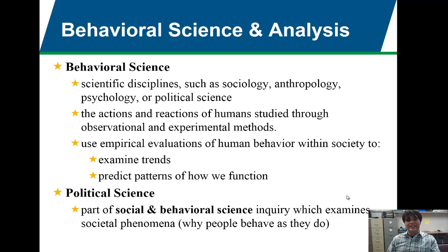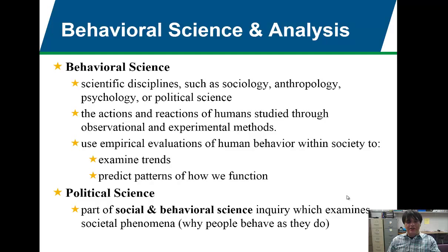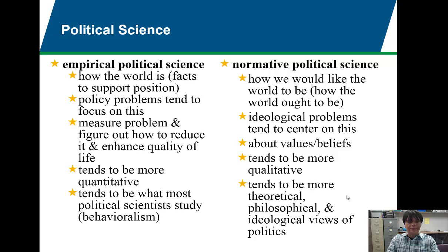Political science specifically falls under behavioral sciences because we study the actions of human behavior within a political context. When you're talking about voting, what Congress wants to do in the next session, or the economics of a country, you're studying political science. Political science is part of the social and behavioral sciences and it examines societal phenomena within the political context — why do people behave as they do when faced with political situations? Political science breaks down into two main categories: empirical political science and normative political science.